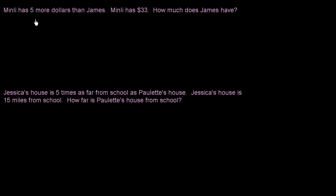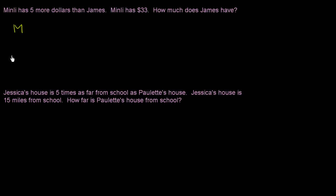We're told that Min Lee has five more dollars than James, and Min Lee has $33. How much does James have? Let's use some letters to represent the amounts: M represents the amount of money that Min Lee has, and J represents the amount that James has.